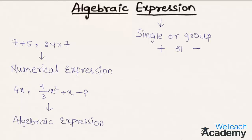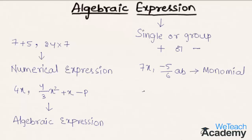Algebraic expressions are categorized according to the number of terms in them. For example, we have 7x and the second expression minus 5 divided by 6ab. If an expression contains only one term, we call it a monomial expression. Similarly, if an expression contains two terms, such as 7x plus 5, we call it a binomial expression.